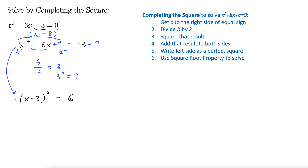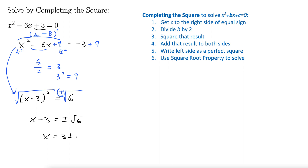Let's go ahead and take the square root of both sides — I am careful to add the plus or minus. That gives us x minus 3 on the left equals plus or minus √6 on the right. Finally, add the 3 to both sides: x equals 3 plus or minus √6.